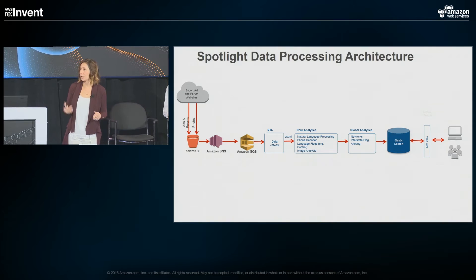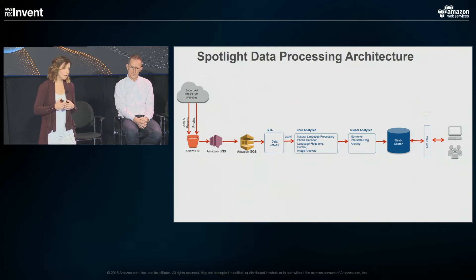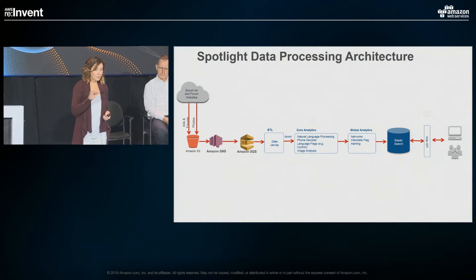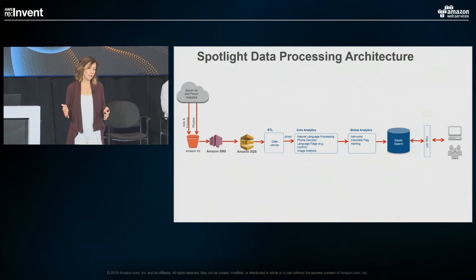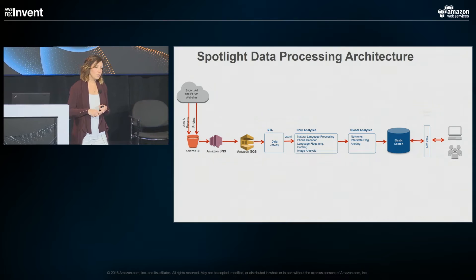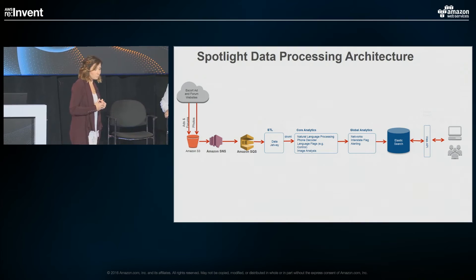We have a third-party provider who collects this information from open forum sites. We split up the photos and the forum posts into two different S3 buckets, listen for traffic, and queue it off. Data Jetway is our transformation layer, and DR stands for Digital Reasoning XML, then we process with core analytics. The core analytics include natural language processing for phone decoding, language flags to understand if somebody is under the control of a pimp, and image processing.